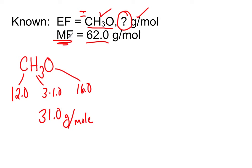Now, the molecular formula's mass is 62 grams. So, if we take the molecular formula mass and divide it by the empirical formula—it's always molecular formula divided by empirical formula—if we divide these two, we realize that the molecular formula is two times larger than the empirical formula.